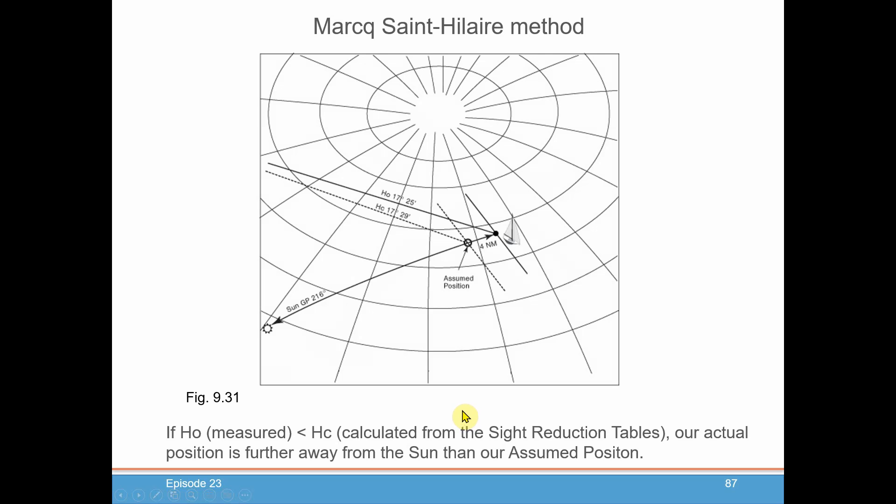Obviously, it can go the other way. Your HO that you measured with your sextant could be less than what you calculated from your assumed position. So our assumed position was here, and tables came out at 17 degrees 29 minutes. But when we measured it with our sextant, it was 17 degrees 25 minutes. The difference is four minutes, which is four nautical miles. But since ours was smaller, that means we're further away, and that gives us that four nautical miles. And what you do is you just, in the same direction of the sun but going the opposite way, you move your position of your boat four nautical miles on your chart.